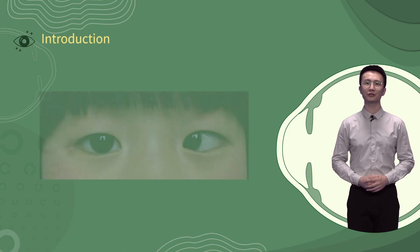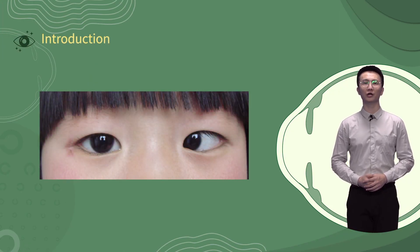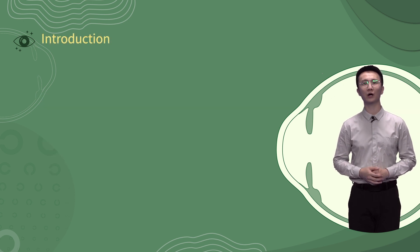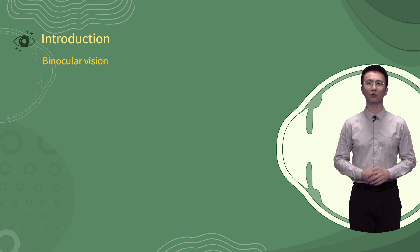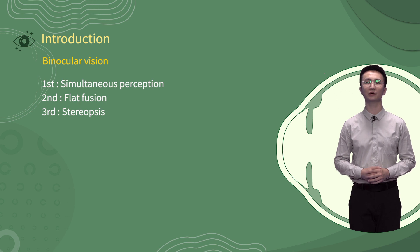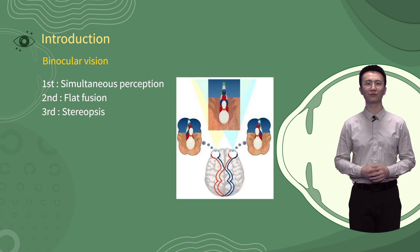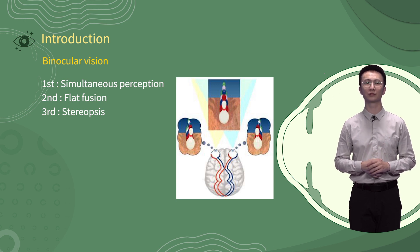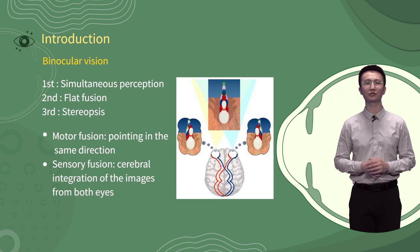Have you ever seen patients like the ones shown here? It seems that they are always using only one eye to focus, with the other eye looking somewhere else. Have you ever wondered why we need two eyes? In fact, binocular vision is important for us to get better visual acuity, broader visual field, and stereopsis. The brain must be able to fuse the two images from both eyes simultaneously, and further form three-dimensional vision. To achieve this, motor fusion is essentially needed to move the eyes in alignment.